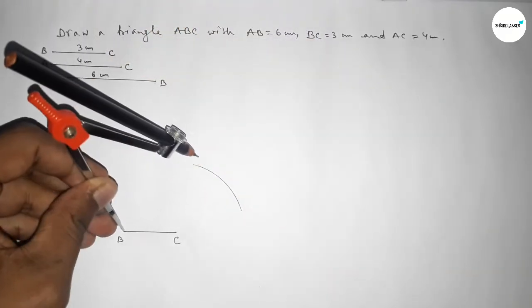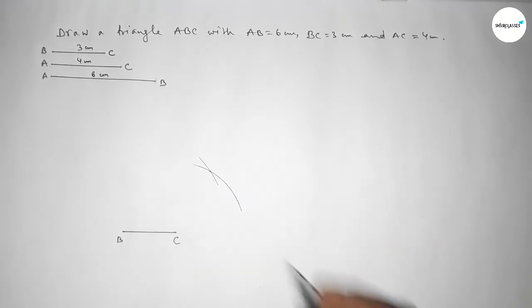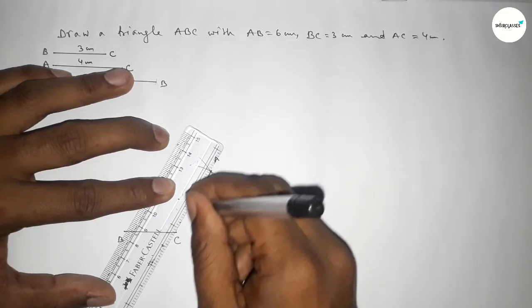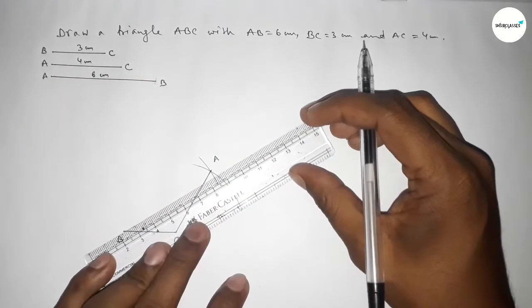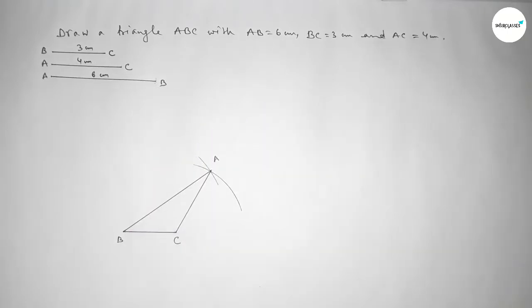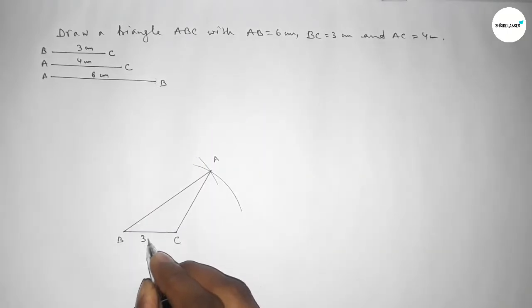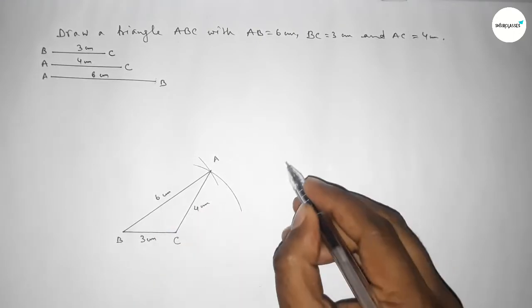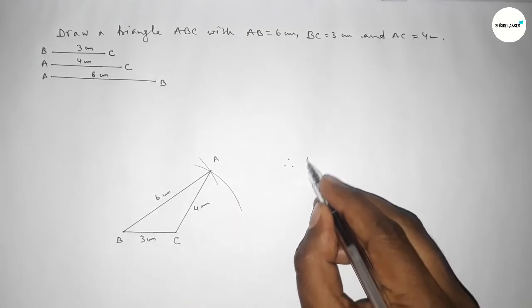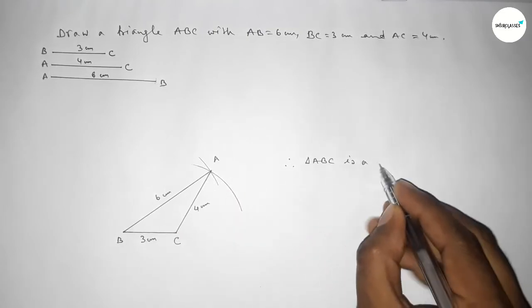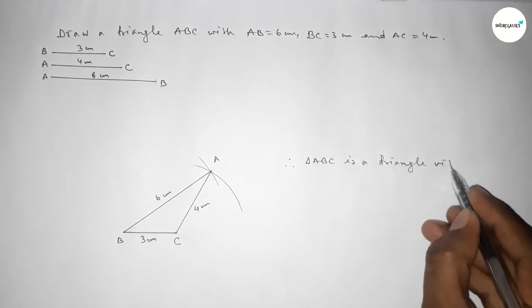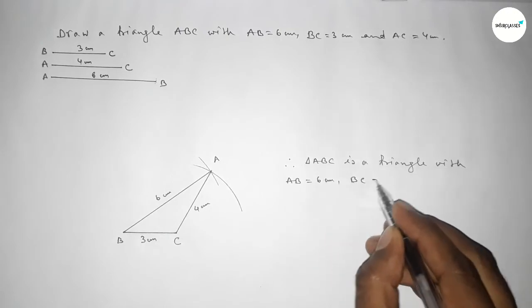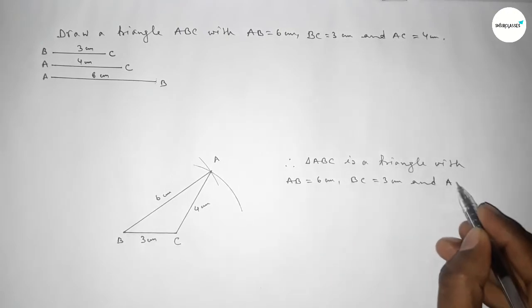Put the compass on B and cut an arc so both curves intersect at a point — this is point A. Join A and C, then join A and B to get triangle ABC. This side is 3 centimeters, this side is 4 centimeters, and this side is 6 centimeters. Therefore, triangle ABC has AB equal to 6 centimeters, BC equal to 3 centimeters, and AC equal to 4 centimeters.